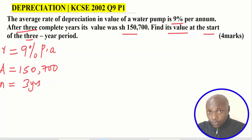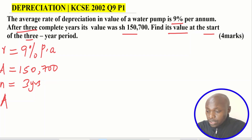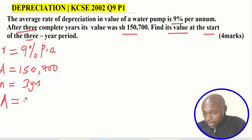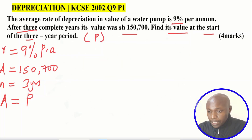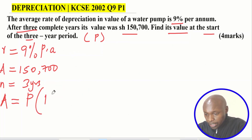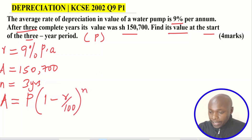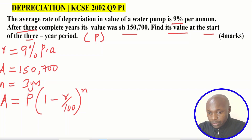The formula for depreciation is: the final value A is given by the initial value — which is what we are calculating, the value at the start of the three-year period — denoted by P (the principle or initial amount), multiplied by the bracket one minus rate over 100, everything raised to the power n, where n is the period.